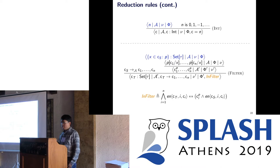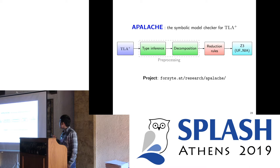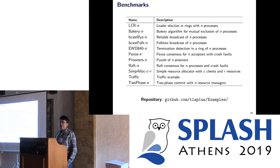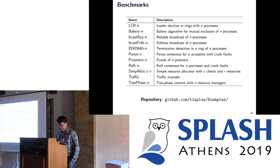We have a framework for our reduction system and we implemented our research idea. We now have the first symbolic model checker for the language TLA+, which you can download from our project website. To evaluate our ideas, we used the following benchmarks — most of them are distributed algorithms with parameterized process counts. The others are combinatorial problems and you can download the benchmarks from our GitHub repository.